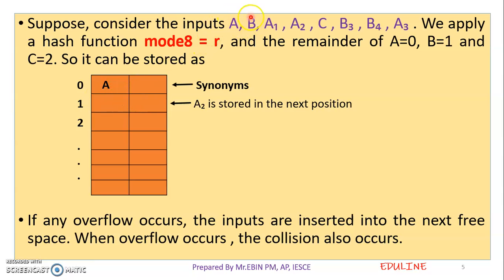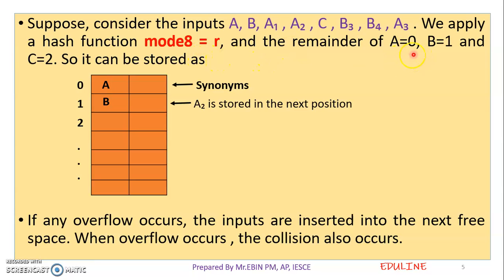The next input is B, which I apply to the hash function. If I apply the result and the remainder is 0, I will save the result in the first slot. The next is A, which I apply to the hash function. If I apply the result and the remainder is 0, I will save the result in the second slot.